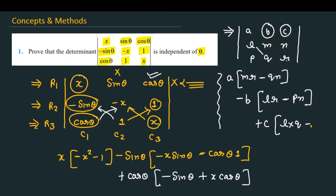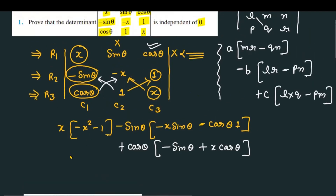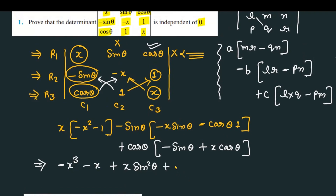Working through the expansion, we are now getting terms: minus x cubed, minus x, plus x sin squared theta, plus x sin squared theta, plus sin theta cos theta minus sin theta cos theta.